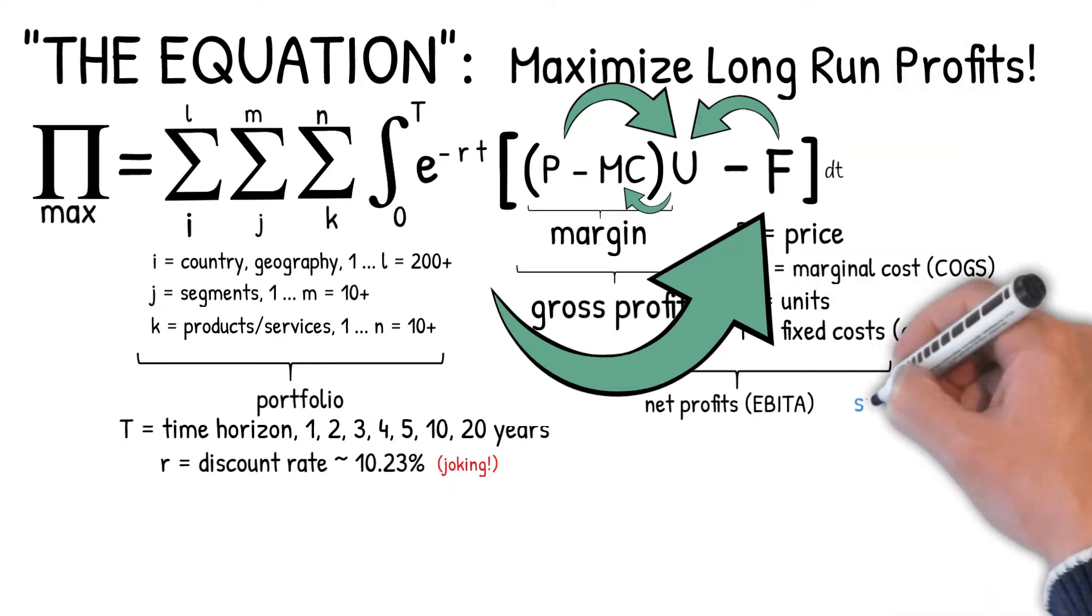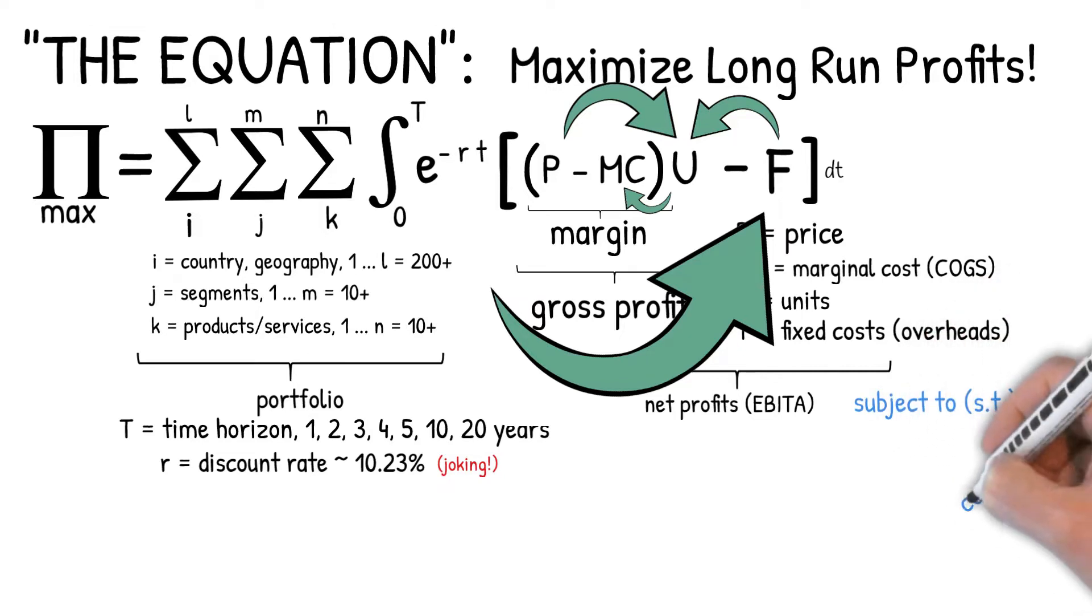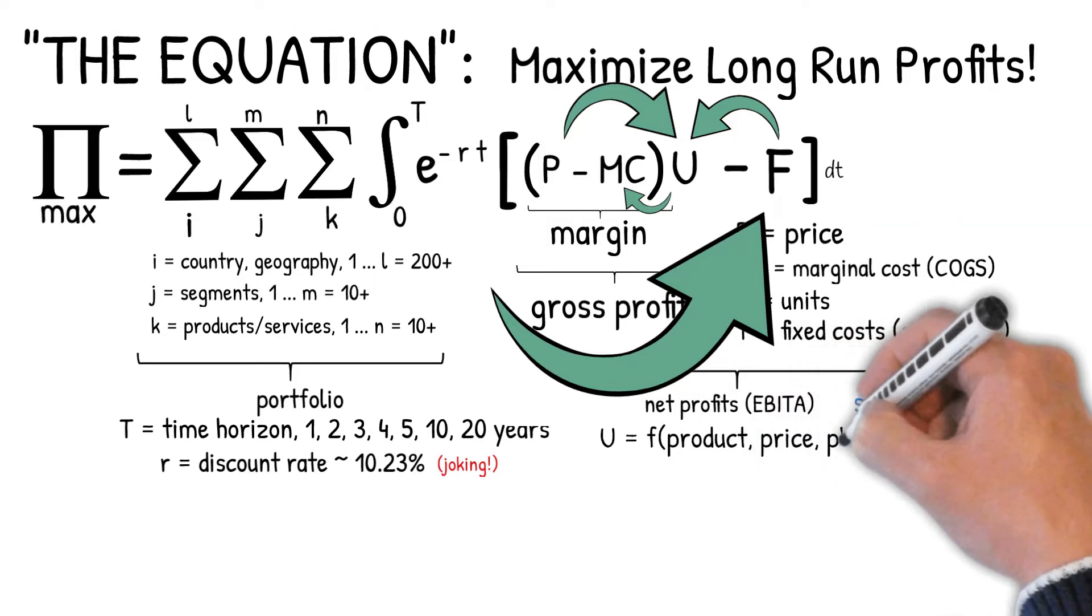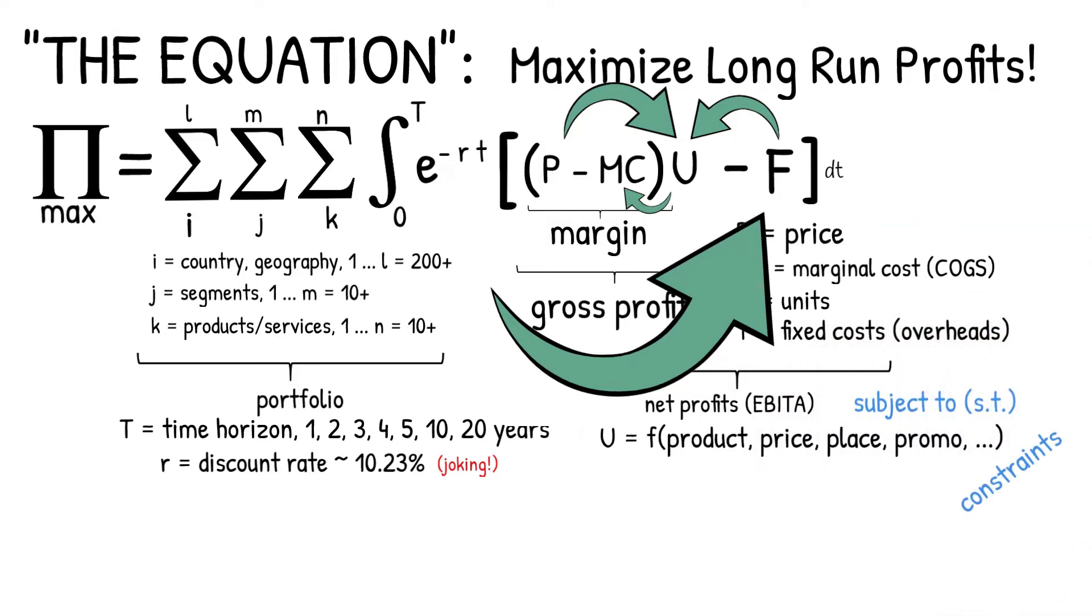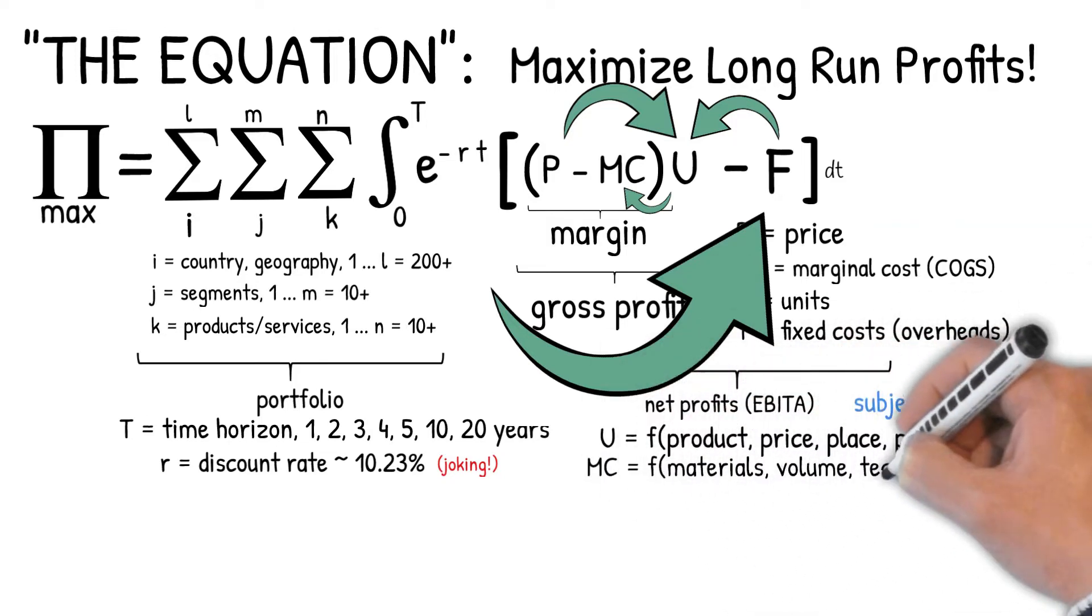Therefore, there are three constraints. These constraints are represented in three functions. Your units are a function of, for example, your marketing strategy. Your marginal costs are a function of your materials, maybe the volume of what you produce and the technology you use to produce them.